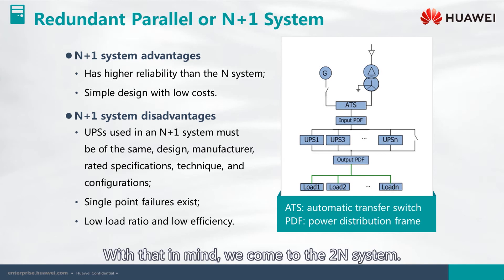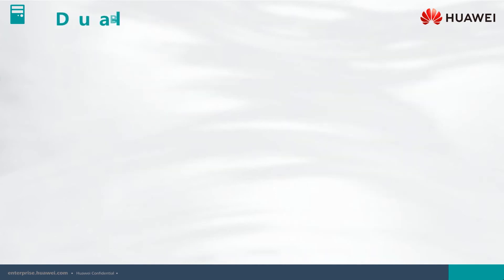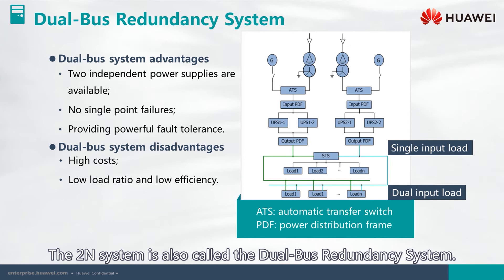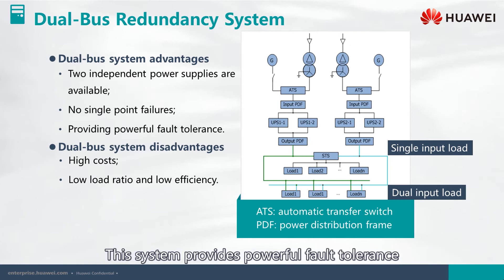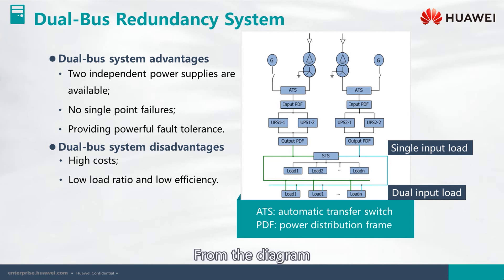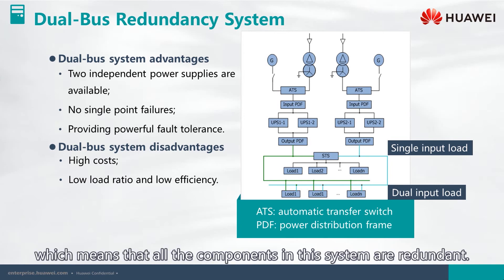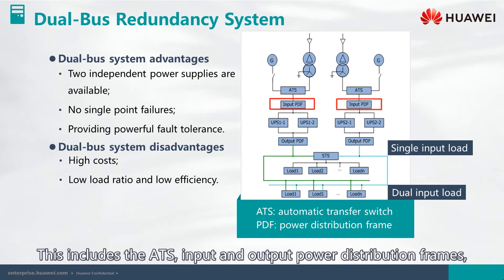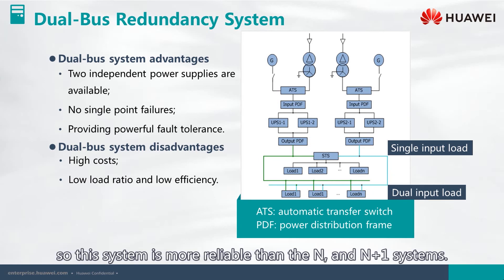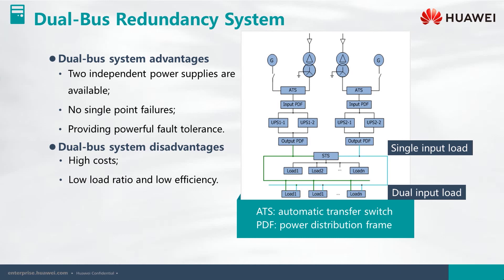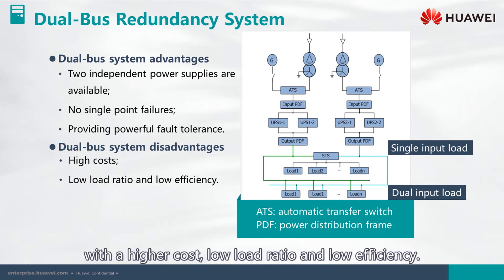With that in mind, we come to the 2N system, also called the dual bus redundancy system. This system provides powerful fault tolerance and there are no single points of failure. From the diagram, we can see that there are two independent power supplies. All the components in this system are redundant, including the ATS and input and output power distribution frames. So this system is more reliable than the N and N plus one systems. However, this comes at a high price, with higher cost, low load ratio, and low efficiency.